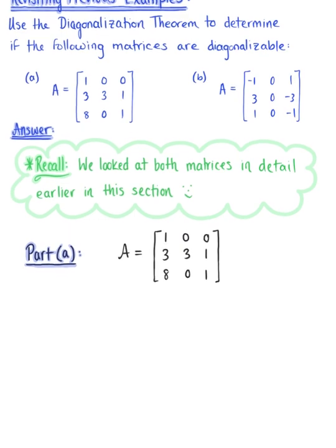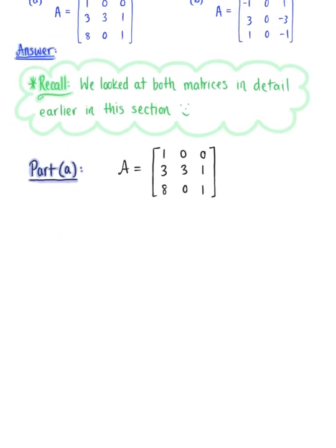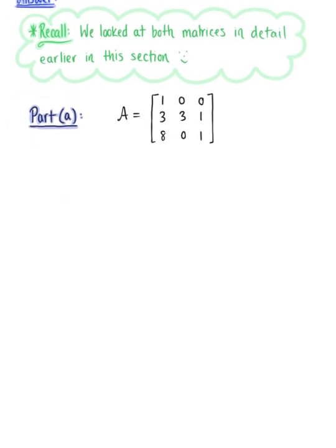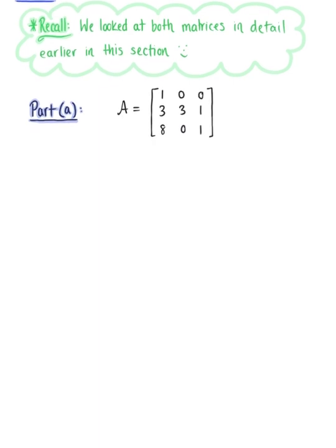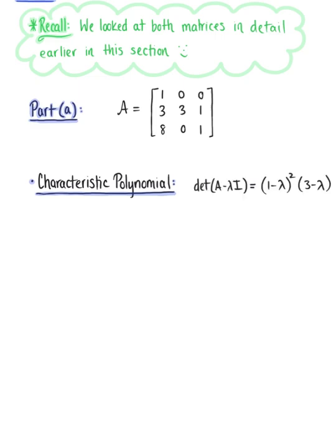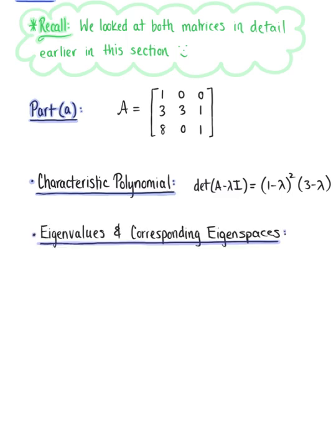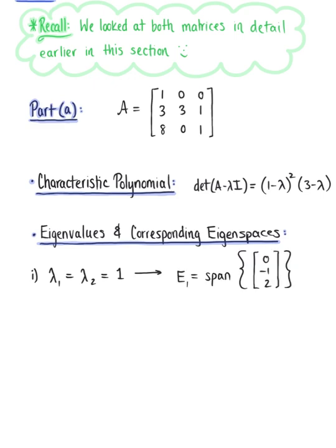For part A, let's begin by recalling what we found previously about this matrix. We found the characteristic polynomial to be defined as (1 − λ)² (3 − λ). We also found the following eigenvalues and their corresponding eigenspaces. The first eigenvalues were lambda sub 1 equals lambda sub 2 equals 1, with the corresponding eigenspace E sub 1, which we can define as the span of the vector (0, −1, 2).